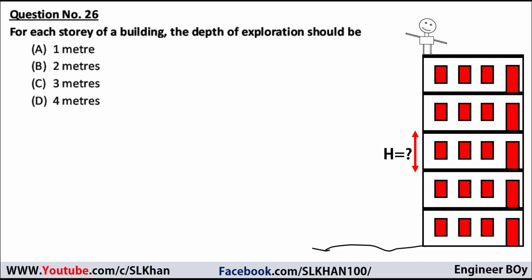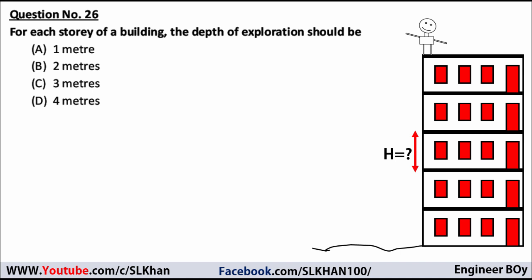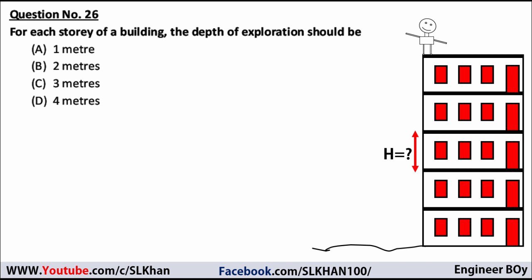1 meter is about 3.281 feet — nobody can enter the room at that height. Option B, 2 meters, is also not correct. 2 meters means about 7 feet, and 7 feet is the standard height of a door, which cannot be the floor-to-floor distance. So 2 meters is also not the correct answer.